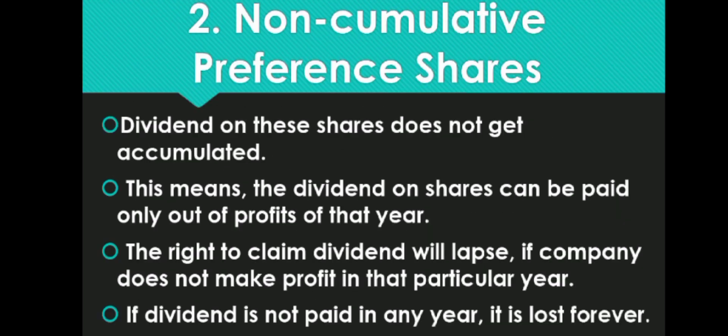Non-cumulative preference shares: Dividend on these shares does not get accumulated. The dividend can be paid only out of the profit of the current year — is saal ka dividend isi saal ke profit mein se milega. The right to claim dividend will lapse if the company does not make profit in that particular year. If dividend is not paid in any year, it is lost forever — us saal ka dividend aapko nahi milega.